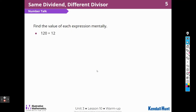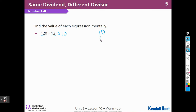When I look at 120 divided by 12, I notice that I have a 12 here and a 12 here. I know that 12 divided by 12 is 1, and then I can add that 0 to make 10. I can also check that work by saying 10 times 12 is 120.